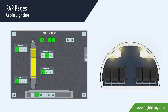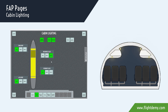Each section can be controlled through the buttons in the FAP. It has three buttons to set the intensity of the lights: bright for 100%, dim 1 for 50%, and dim 2 for 10%. Also, the lights can be switched off by pressing the active push button a second time.